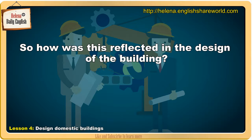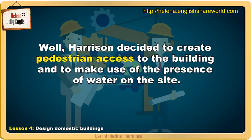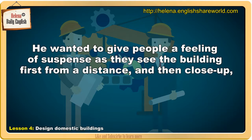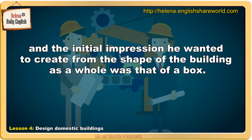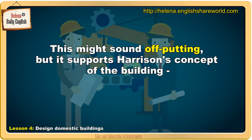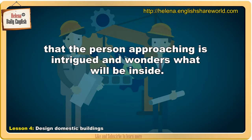So how was this reflected in the design of the building? Well, Harrison decided to create pedestrian access to the building and to make use of the presence of water on the site. As people approached the entrance, they therefore have to cross over a bridge. He wanted to give people a feeling of suspense as they see the building first from a distance and then close up, and the initial impression he wanted to create from the shape of the building as a whole was that of a box. The first side that people see — the southern wall — is just a high, flat wall uninterrupted by any windows. This might sound off-putting, but it supports Harrison's concept of the building: that the person approaching is intrigued and wonders what will be inside.